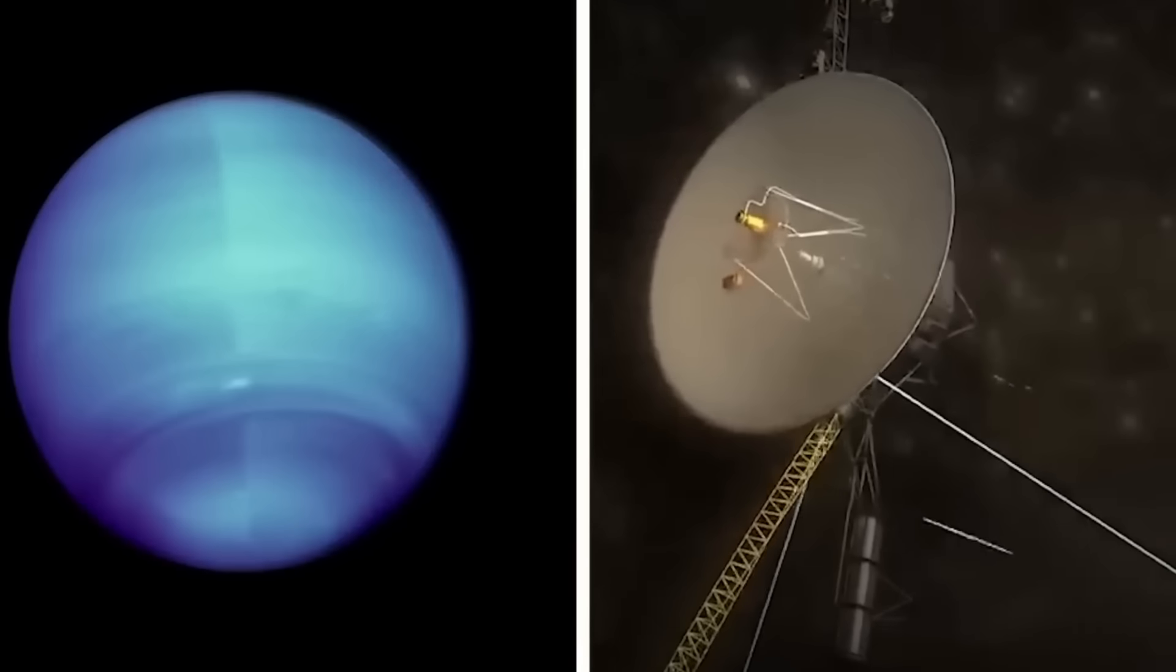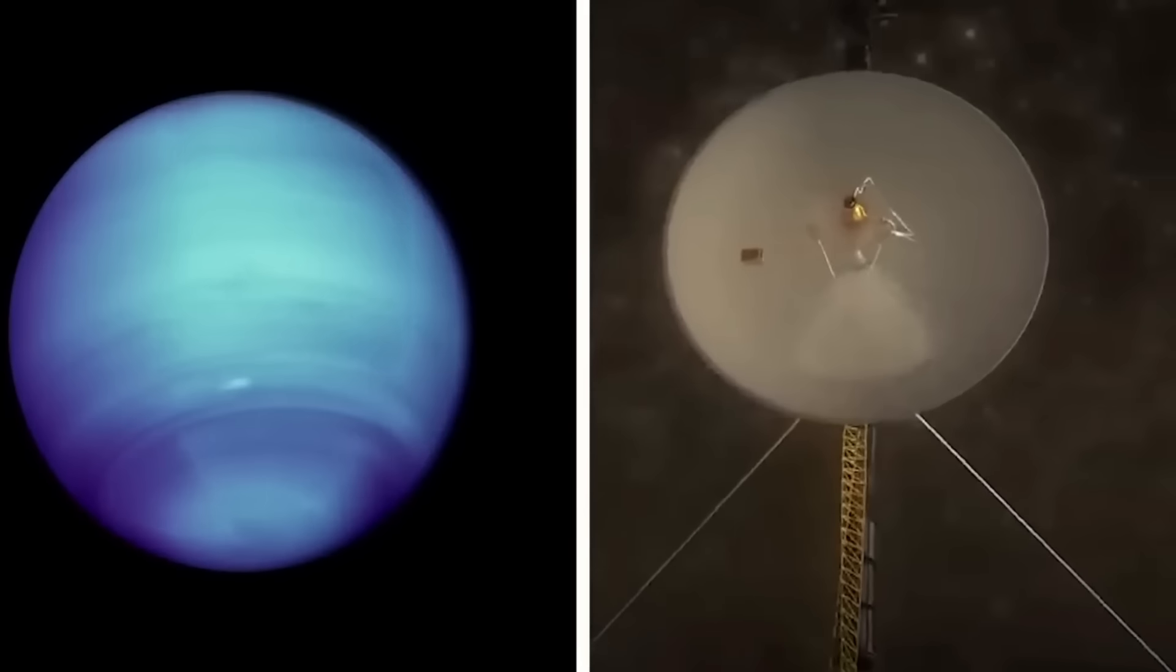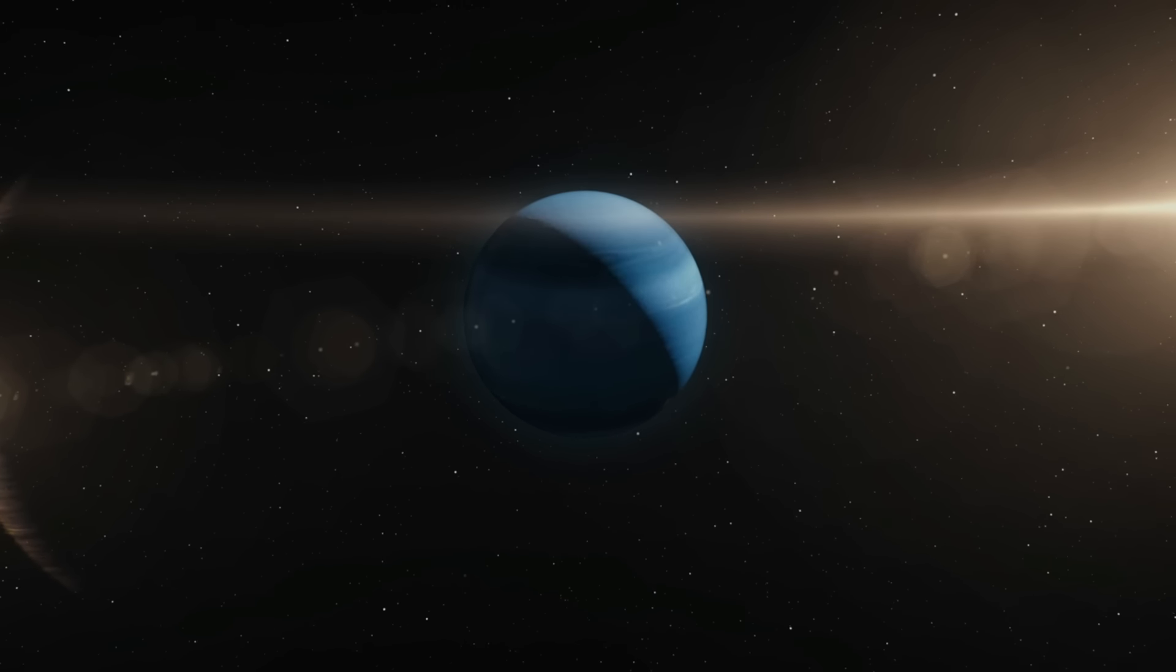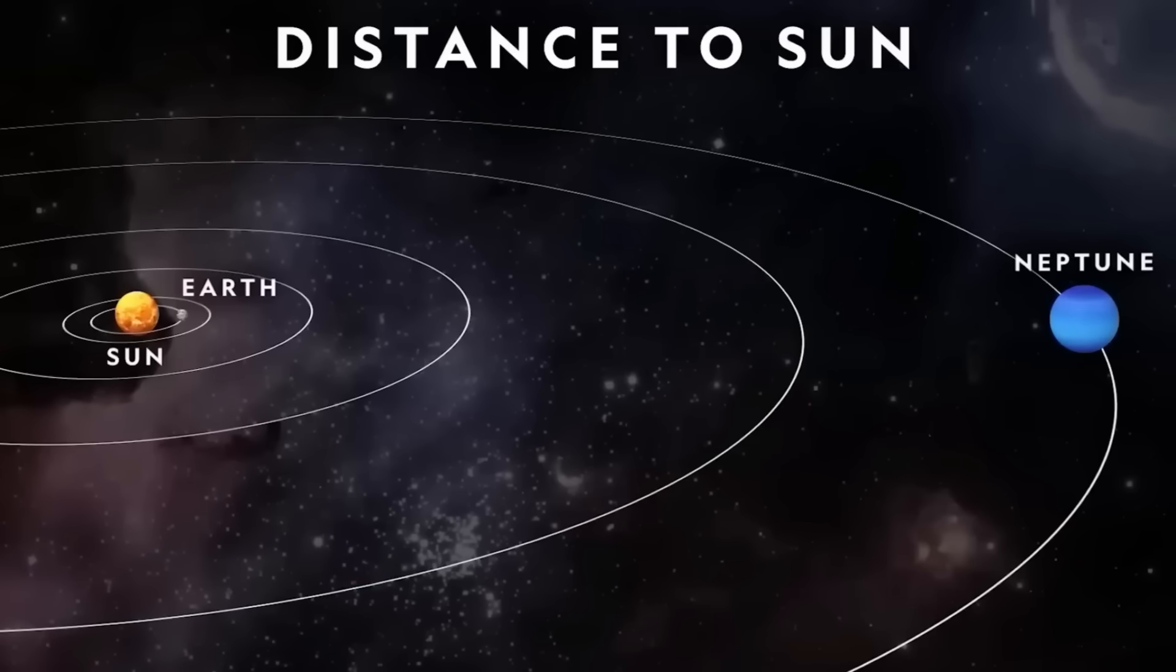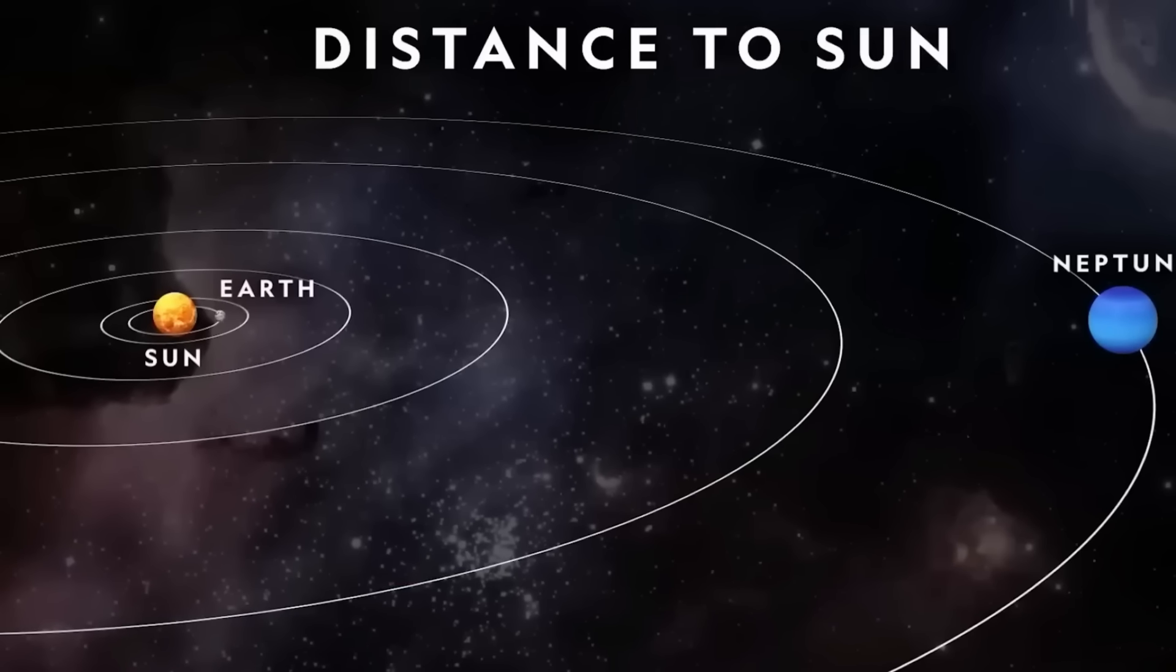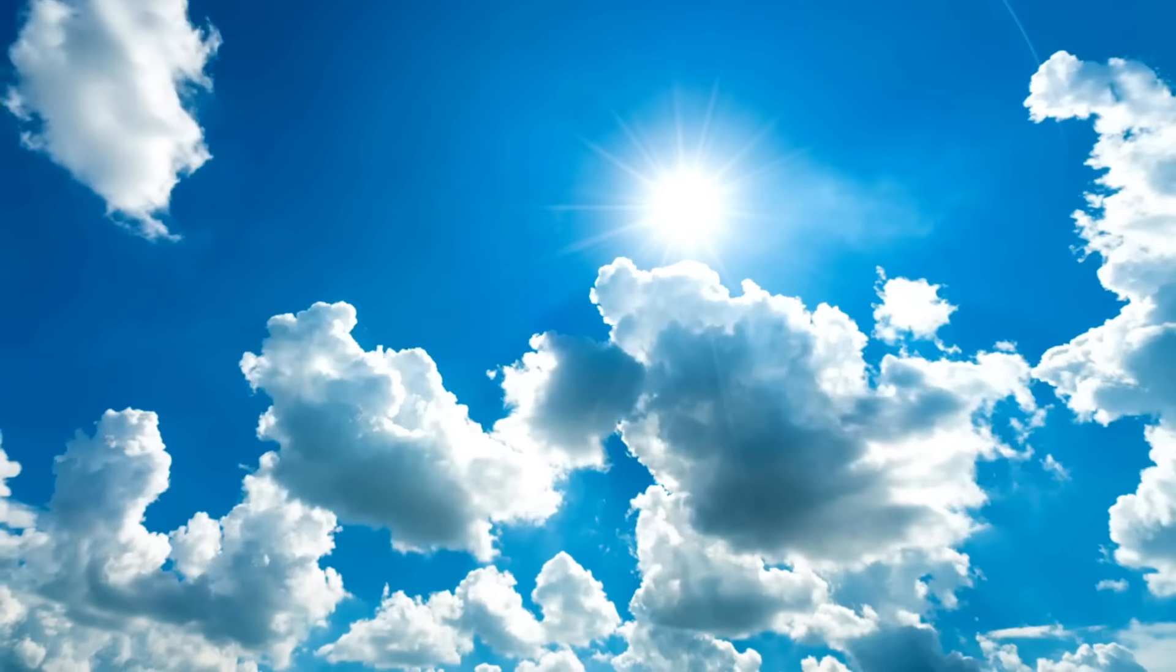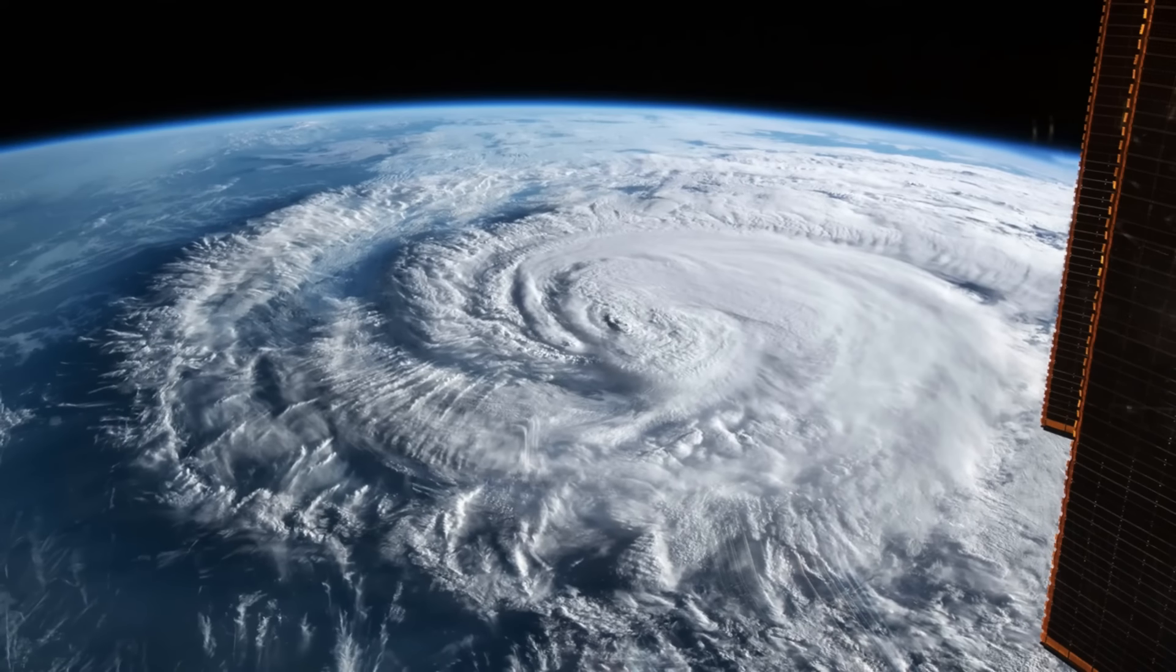Voyager 2 collected hitherto unseen data on Neptune, a planet traditionally thought to be inferior by scientists. How a planet so far from the sun, getting so little solar energy, could sustain such varied weather patterns and climates astounded and perplexed them.